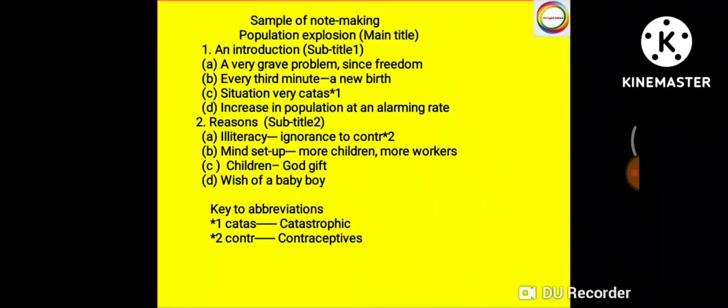This is a sample of note-making. You can see at the top, 'Population explosion' is the main title. Below that, number one 'An introduction' and number two 'Reasons' are subtitle one and subtitle two. Below subtitle one, I've followed the second indenting with a, b, c, d format.